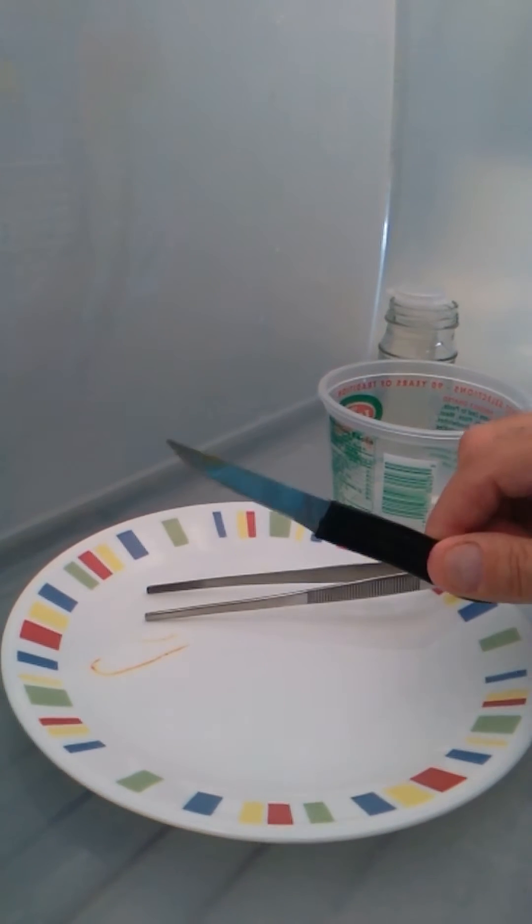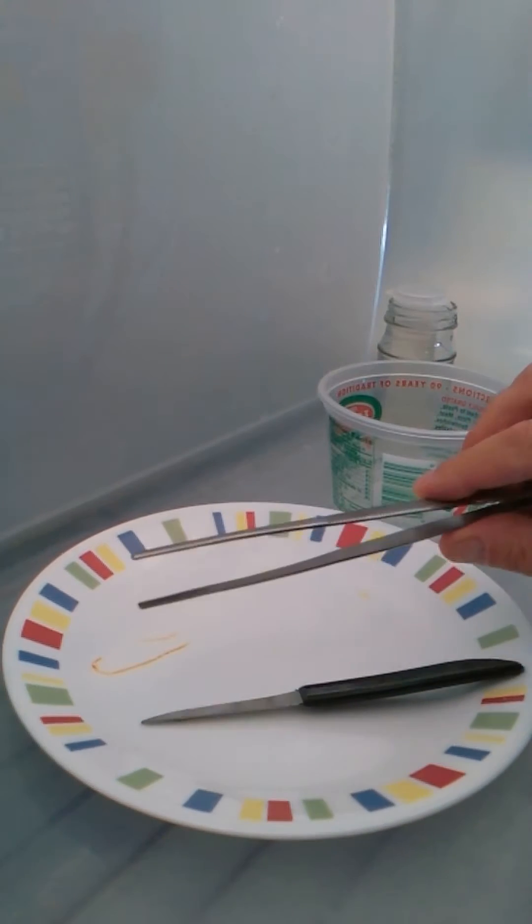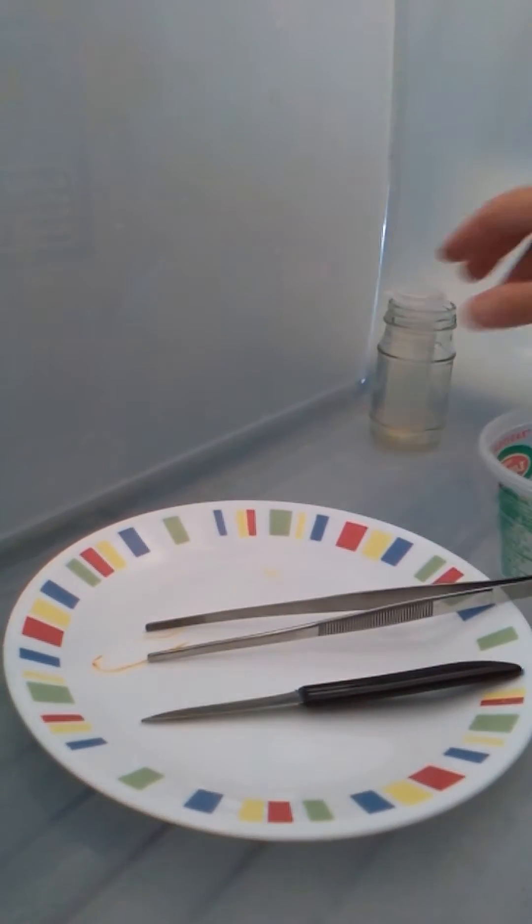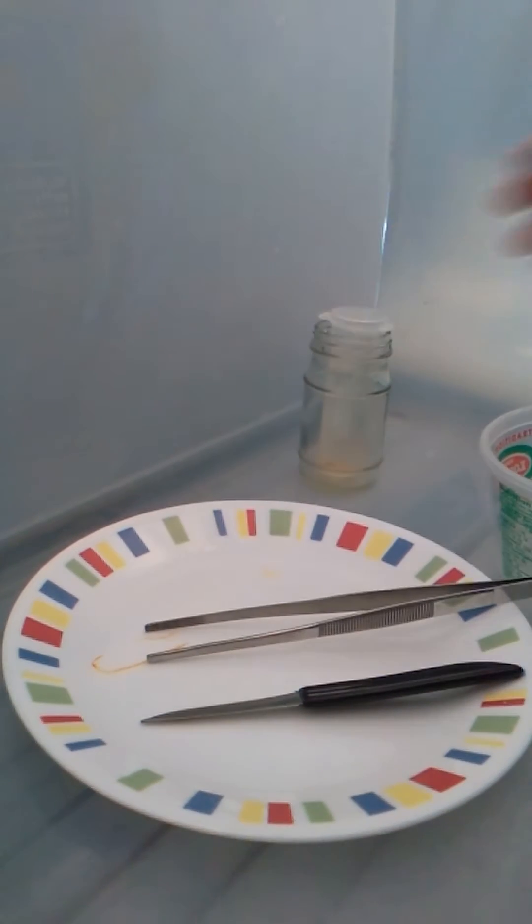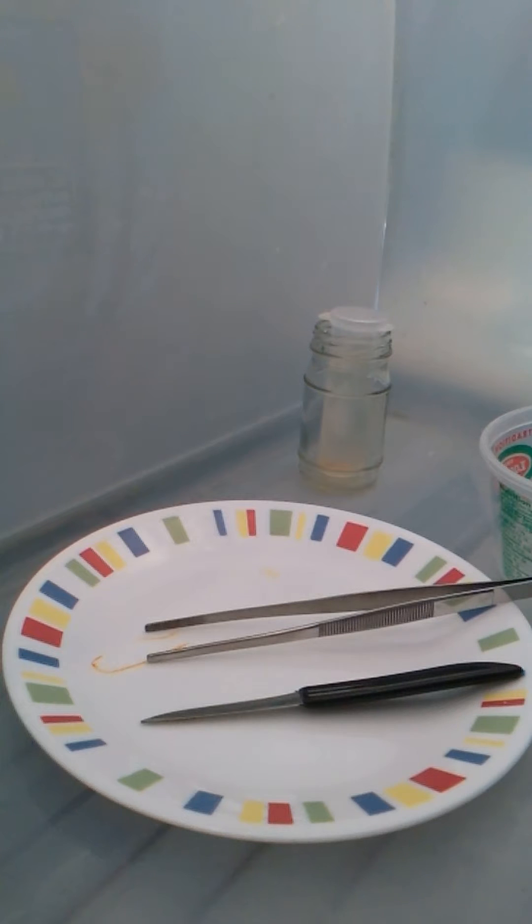I've got paring knives which are going to be my scalpel, forceps, my cleaning plate, my jar of alcohol, and my spray bottle of alcohol for cleaning the plate and everything.